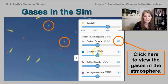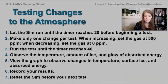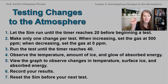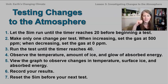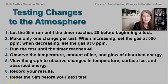On the sim, they all start at 200. What we're going to do is load up the sim, let it run for about 20 seconds so it reaches equilibrium, and then make just one change per test. We're going to try increasing by moving it up to 500, or decreasing it by moving it down to zero parts per million. Then hit play and let it run until the timer reaches 40. Then observe the temperature, the amount of ice, and the glow of absorbed energy.